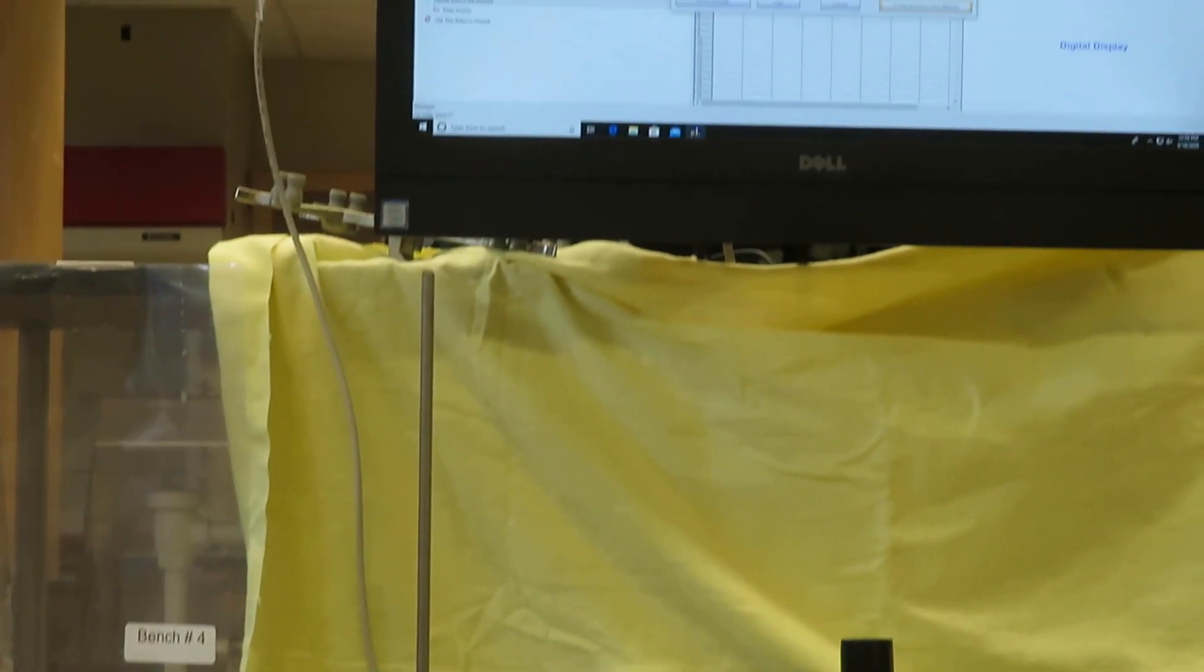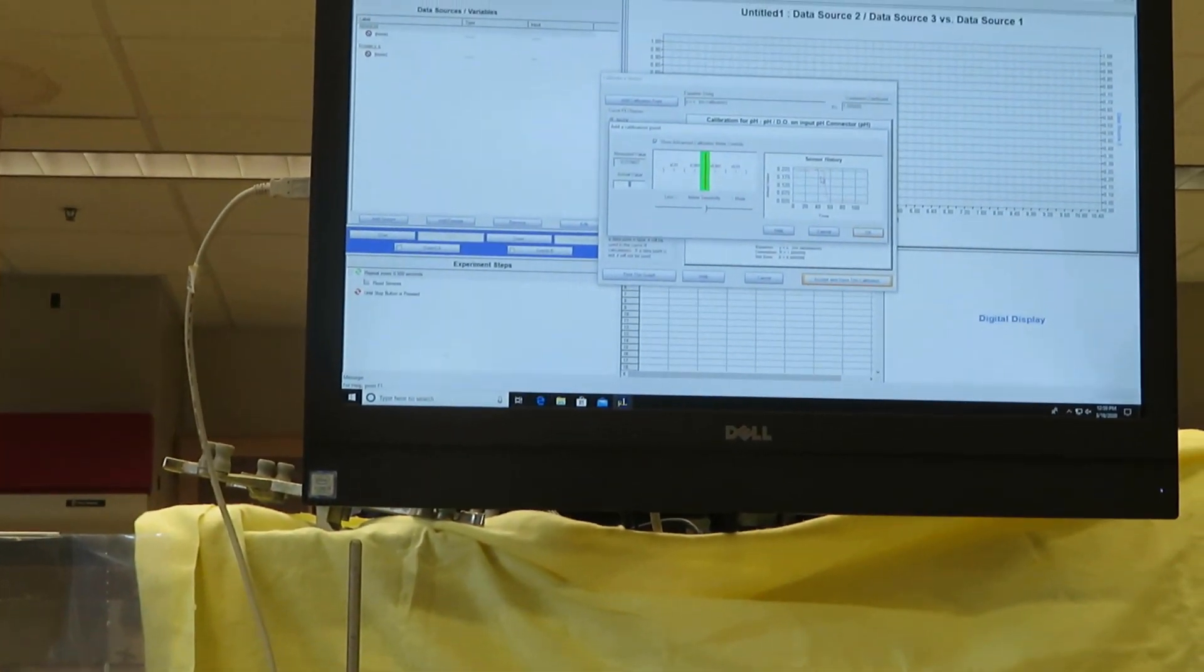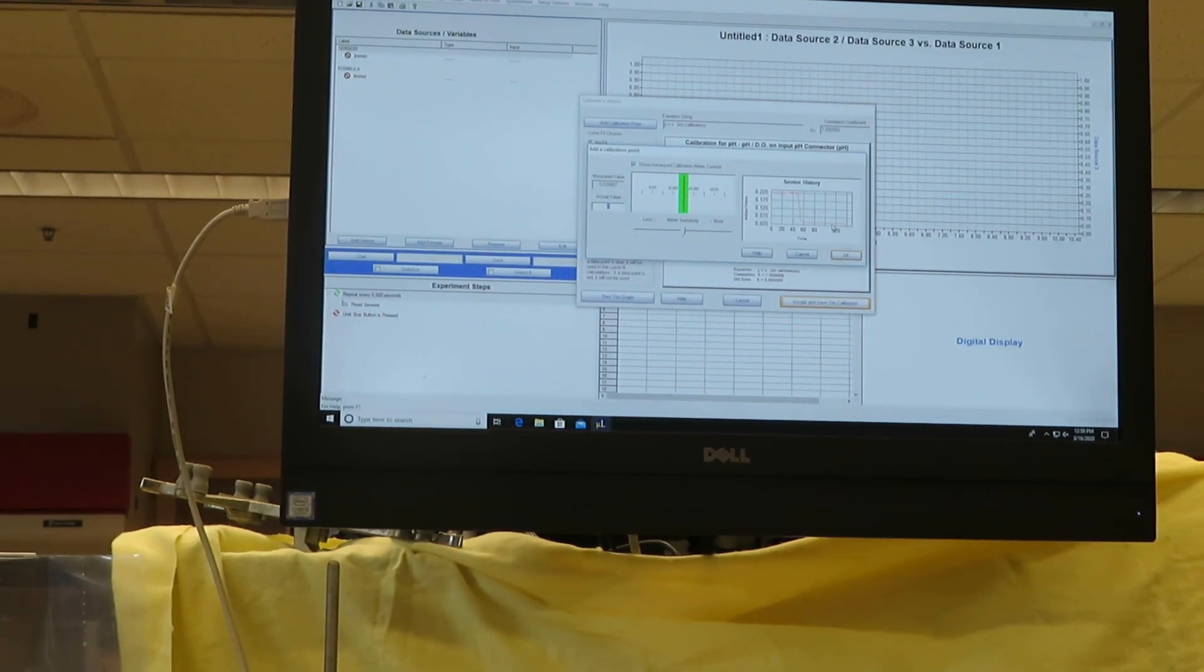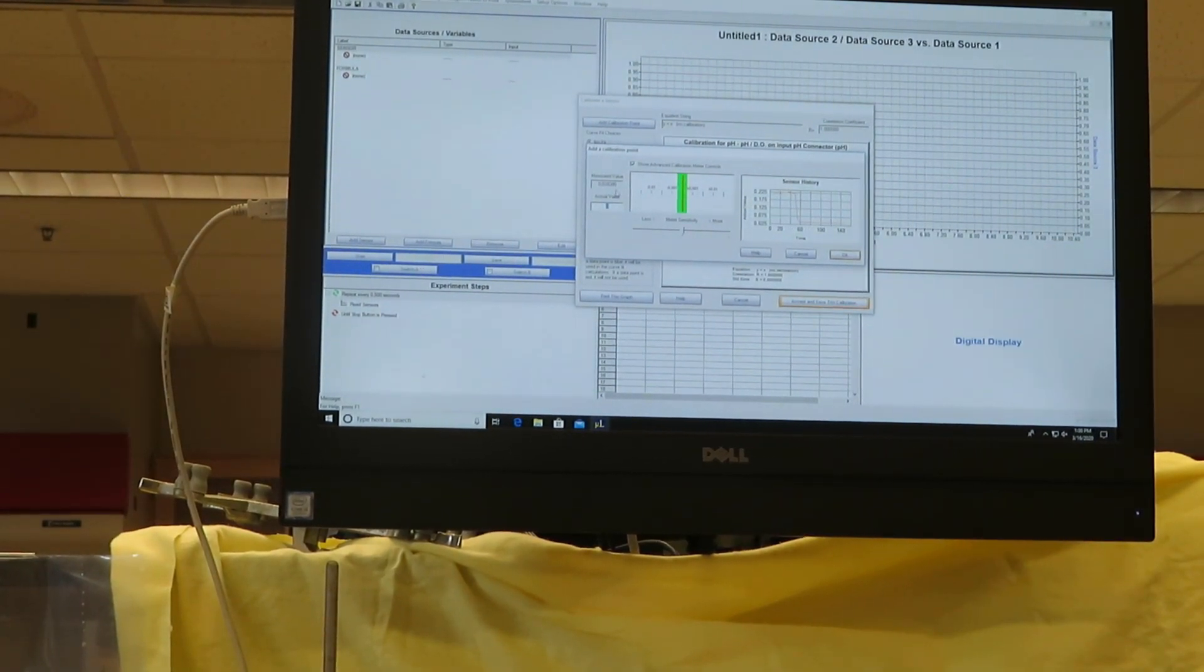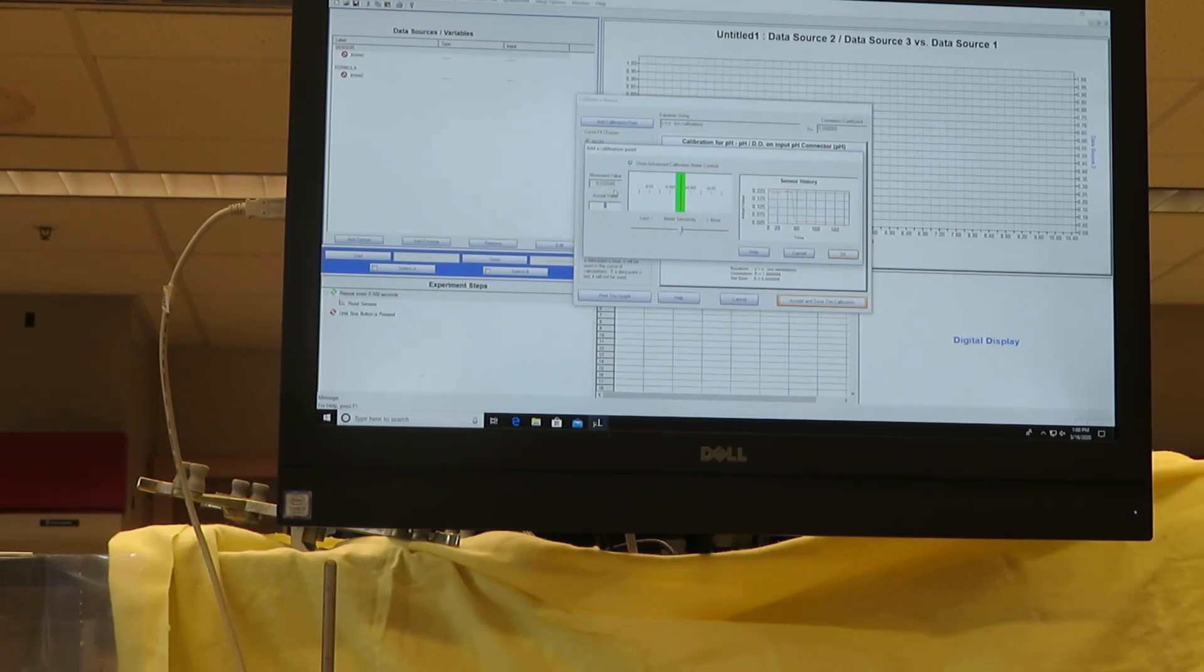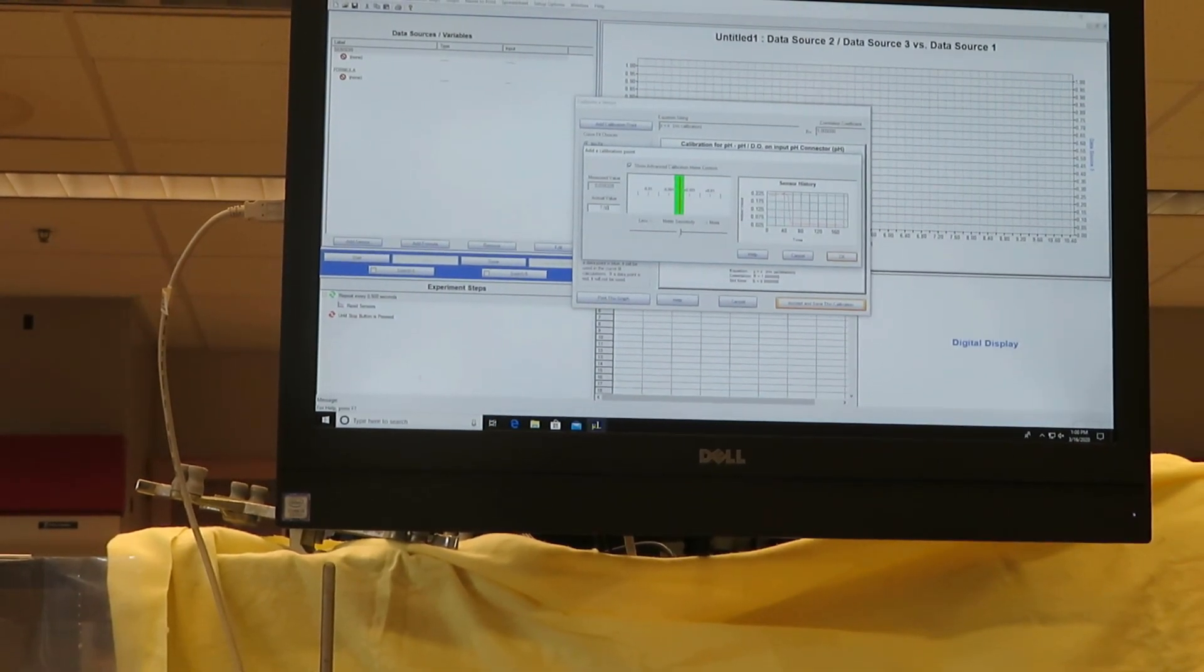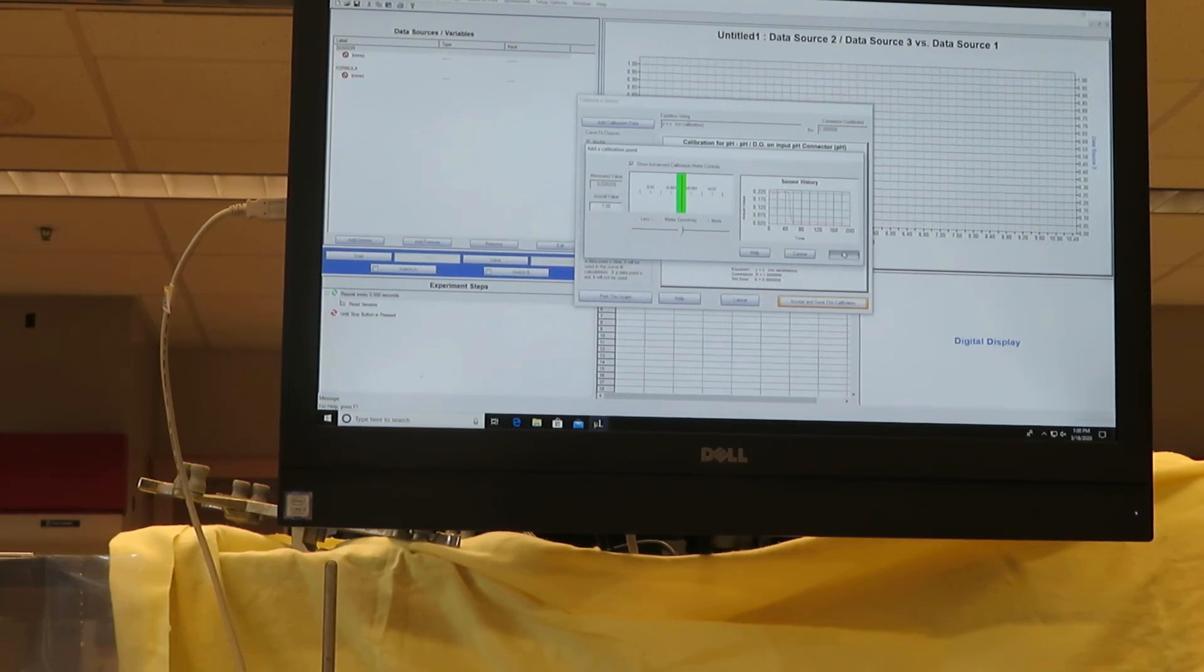As you can see on the screen, there's been a dramatic change in the voltage because we're at a different buffer solution. It seems to have leveled out, so I can enter the value 7.00.